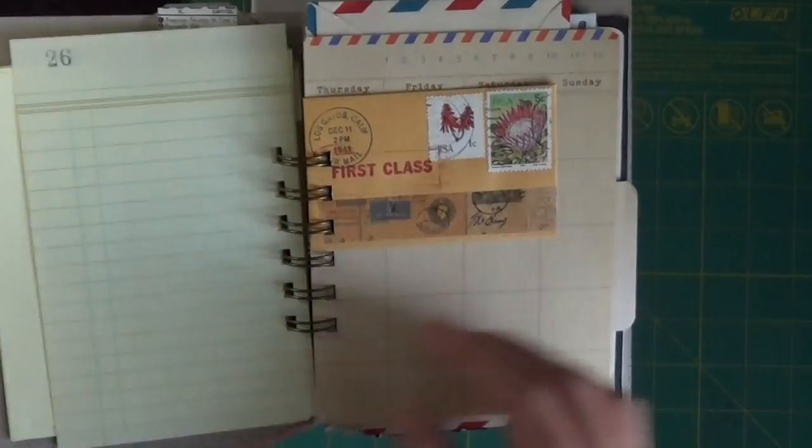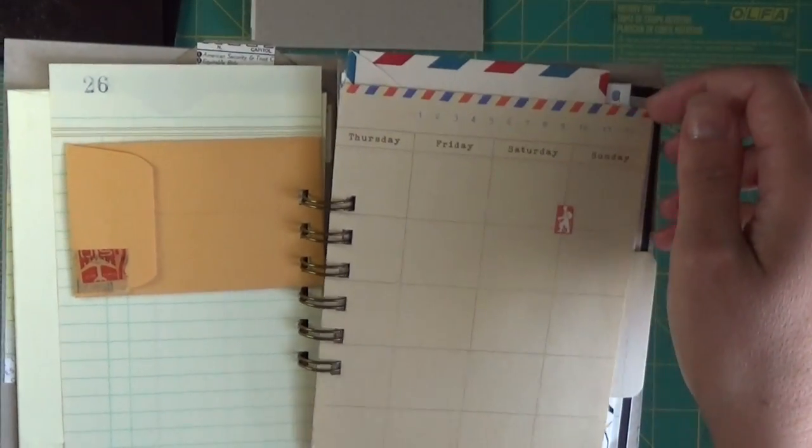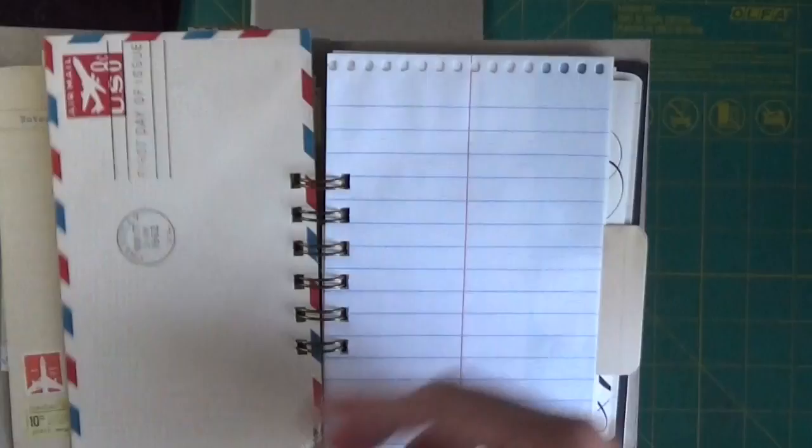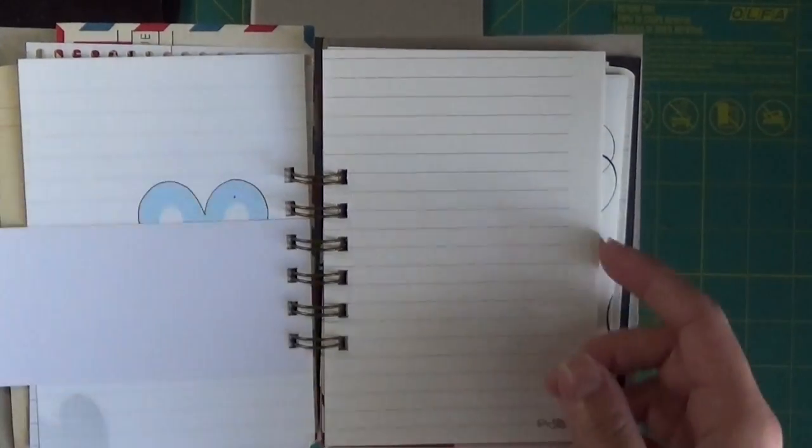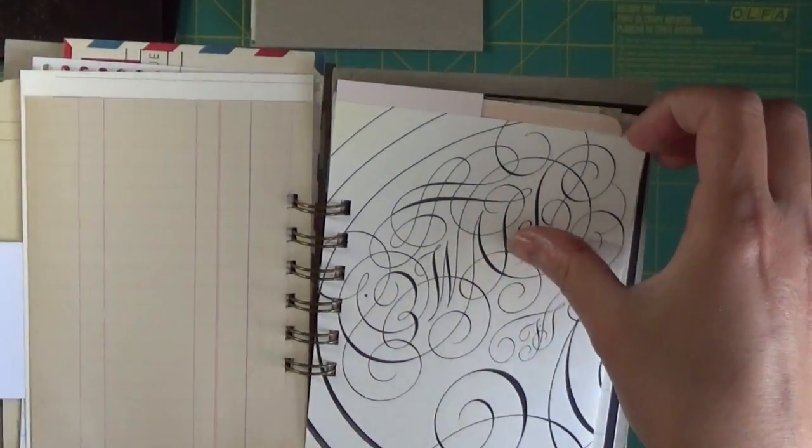And then this is the fourth one that I've done. I haven't done anything else yet. So this is again very similar. Pages and sheets of paper, envelopes, all that sort of thing.